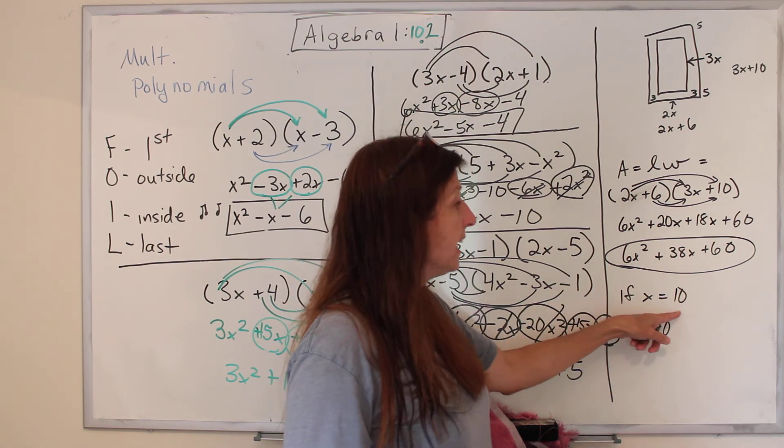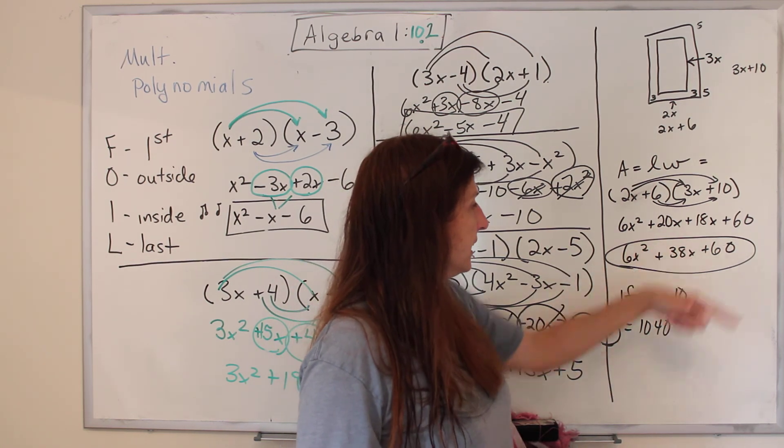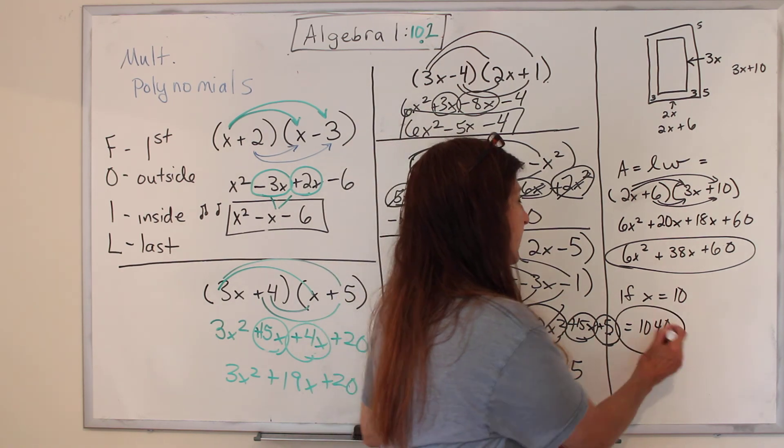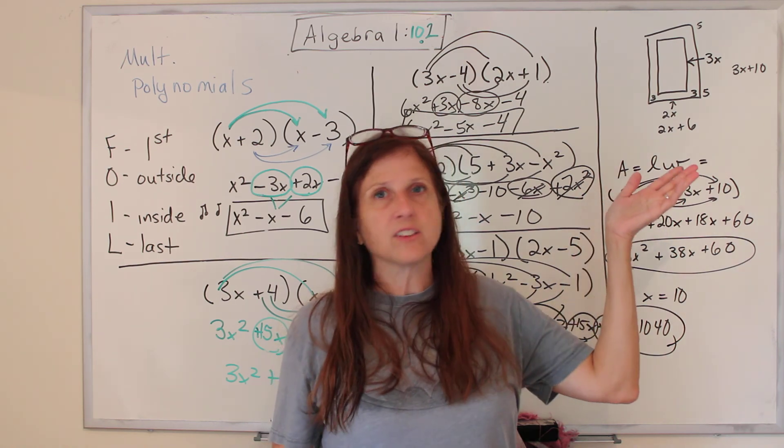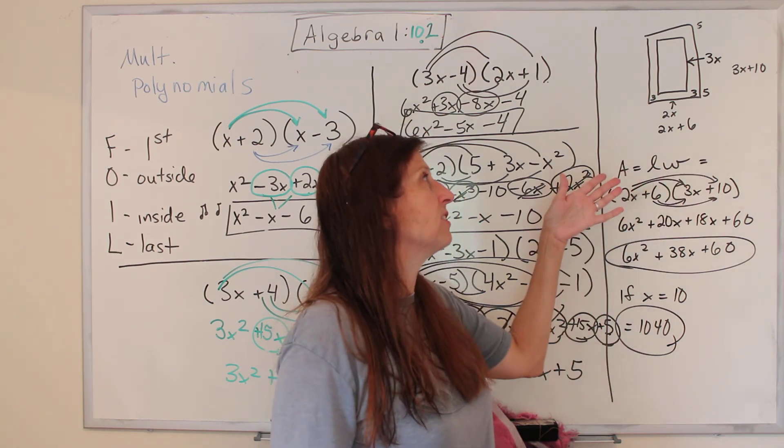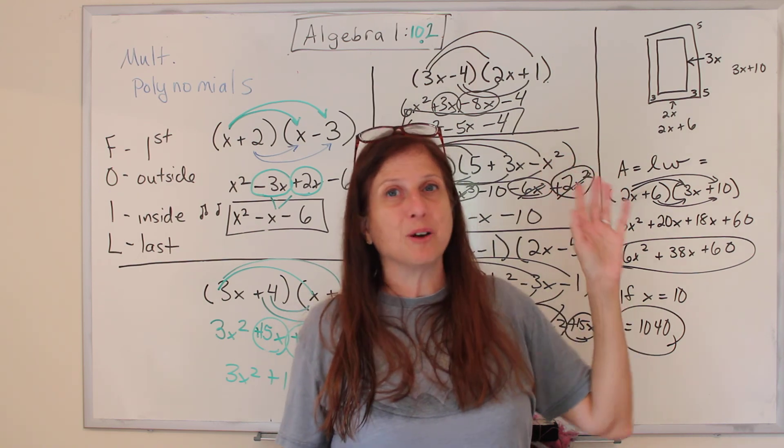And then they say, well, if x is 10, what is it? You substitute 10 in for x, and you'd get 1040. Look at it in your book. Make sure it makes sense. They'll put this test on the SAT, the ACT, and your college entrance exams. But I really don't like that problem.